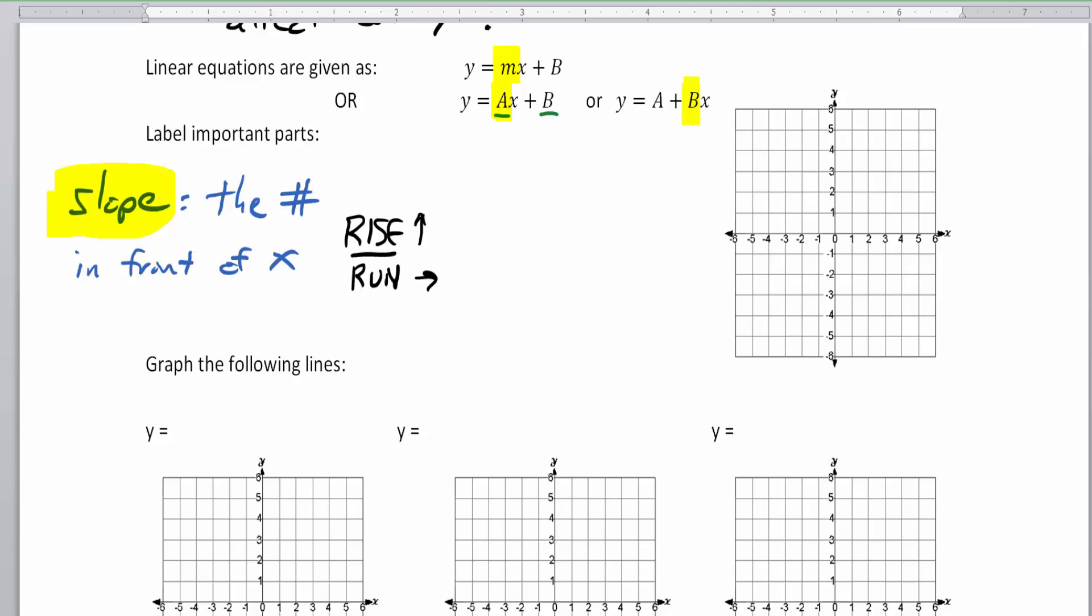So the number by itself, the letter b in this example, the letter a, those numbers by themselves is called the y-intercept. Because every linear equation is going to cross the x or the y-axis. And we're not going to talk about vertical lines. So every non-vertical line is going to cross the y-axis. And the y-intercept is the number alone.